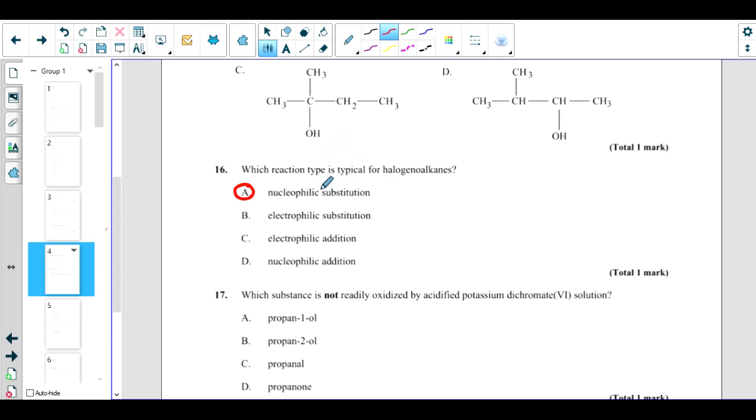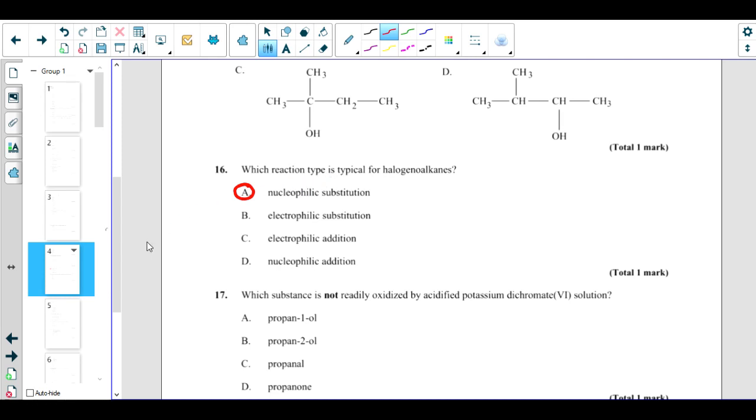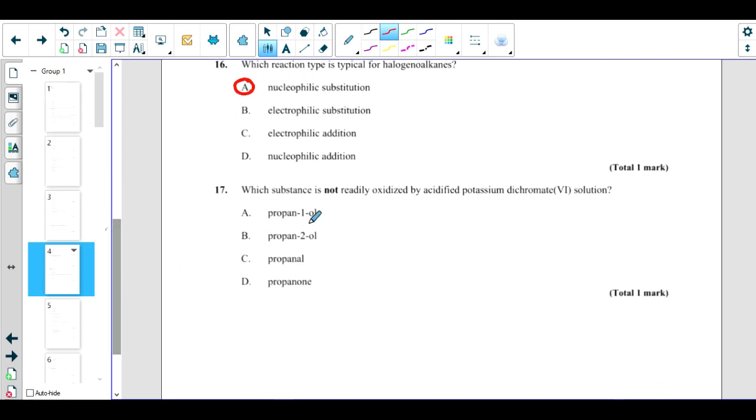Which substance is not readily oxidized by acidified potassium dichromate solution? Alcohols and aldehydes can be oxidized by these solutions. So ketones, because they have no hydrogen in the functional group, they cannot be oxidized. So this propanone, this ketone, this is the correct answer.